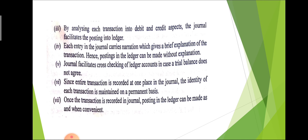Journal facilitates cross-checking of the ledger, meaning we can easily cross-check the ledger and mathematical accuracy can be verified. Entire transactions are recorded at one place in the journal, so the identity of each transaction is maintained on a permanent basis. Once the transaction is recorded in the journal, posting in the ledger is very easy and convenient for the user.